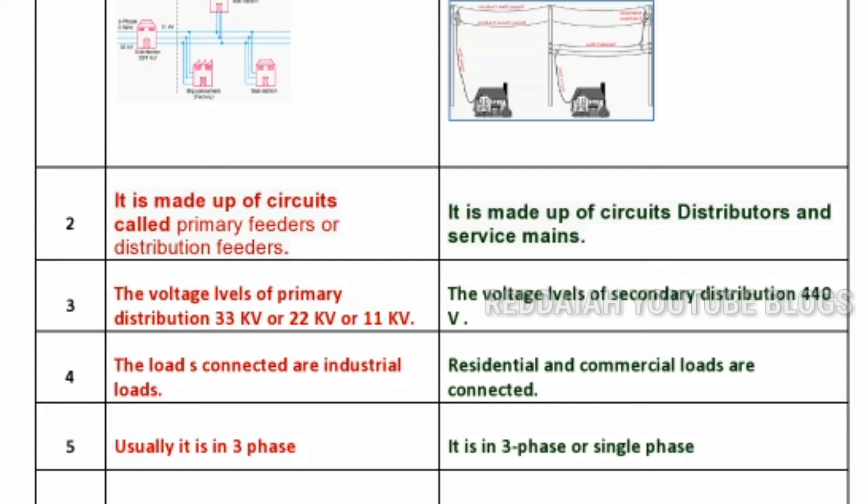The voltage levels of the primary distribution system are 33 kV, 22 kV, or 11 kV. In the secondary distribution system, the voltage levels are 440 volts 3-phase or 220 volts single phase.